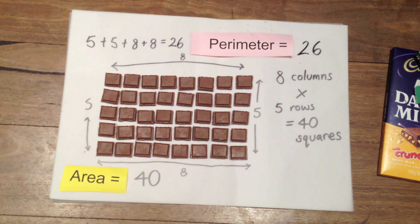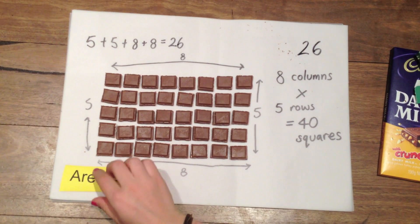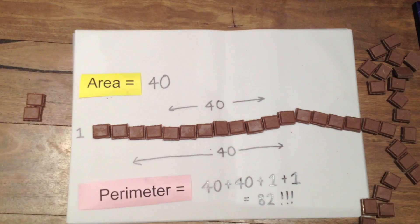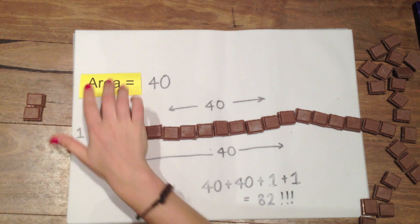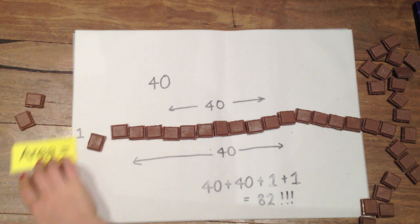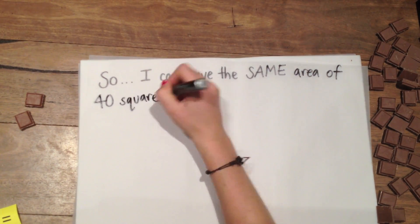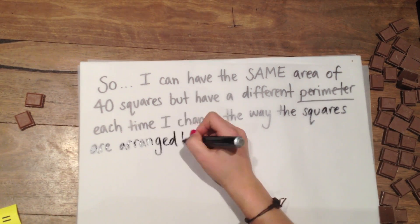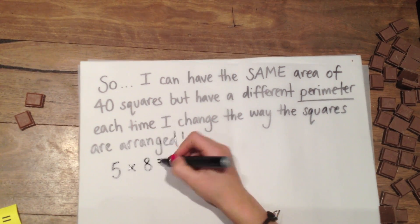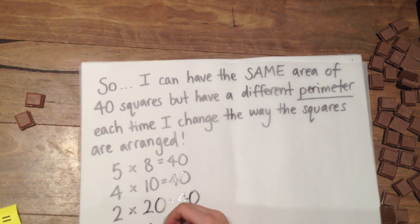Remember, this first shape had a perimeter of 26 squares, and this second shape had a perimeter of 82. Yet they both used 40 squares. So I can have the same area of 40 squares but have a different perimeter each time I change the way the squares are arranged.